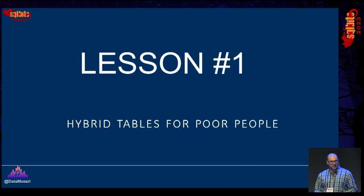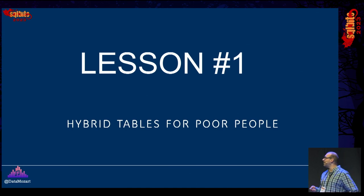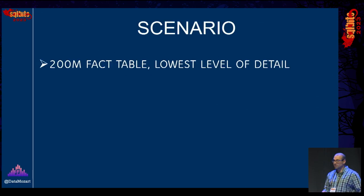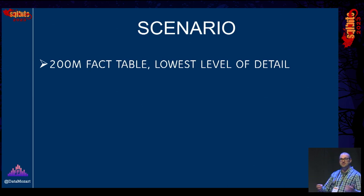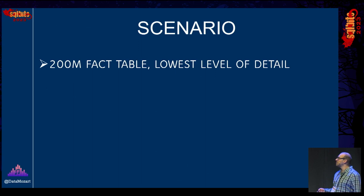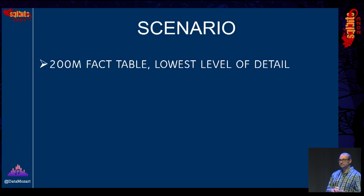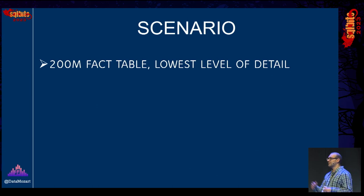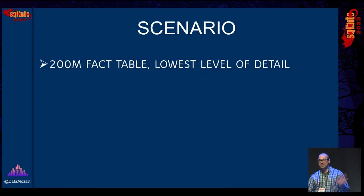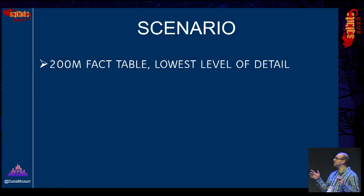Lesson number one is called 'Hybrid Tables for Poor People' — and you'll see why. The scenario: a client had a fact table of 200 million rows, and their requirement was to analyze data at the lowest level of detail. At first glance that looked like a perfect use case for a composite model — build aggregated tables on top, use import mode for those, and leave the detail table in DirectQuery. Classic composite model, easy win. But the specific requirement was to dynamically choose which attributes to use for aggregation.